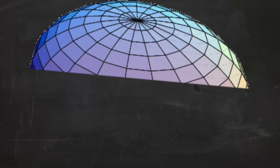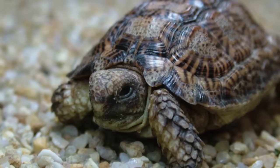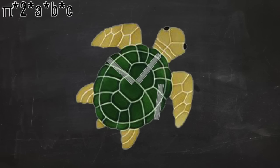This turtle is actually half of a spherical oval called a hemellipsoid. If we know his measurements, we just multiply pi by 2 and then multiply all the lengths of his radii together and divide by 3.